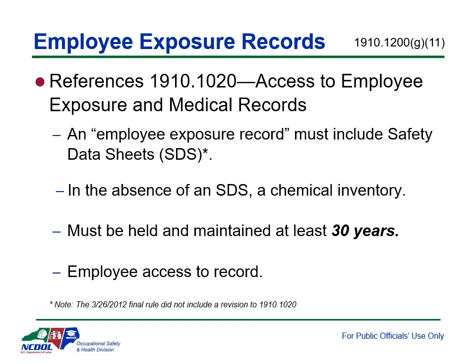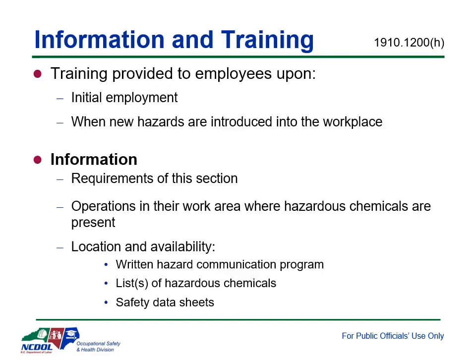Whenever an employee or their representative requests access to an employee exposure record, the employer must provide access in a reasonable time, place, and manner. If the employer cannot provide access within 15 working days, the employer must inform the employee or their representative within that 15-day working period of the reason for the delay and the earliest date the record will be made available.